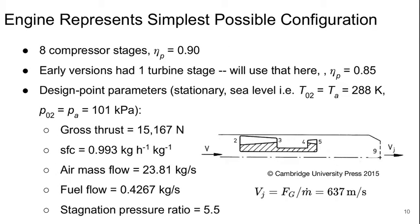This is really as simple as an engine can get. There's eight compressor stages. We'll assume a 90% polytropic efficiency. Early versions of this engine had a single turbine stage and we can use that here. We'll assume an 85% polytropic efficiency for the turbine.